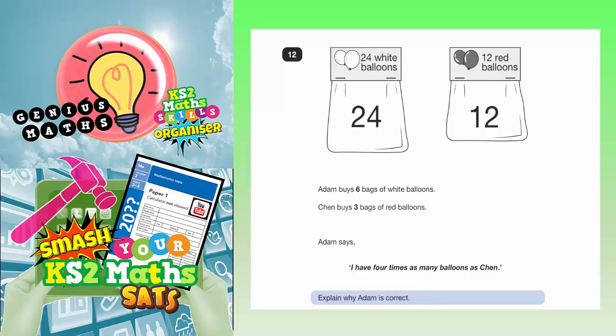Question 12. Adam buys six bags of white balloons and Chen buys three bags of red balloons. Adam says I have four times as many balloons as Chen. Explain why Adam is correct.